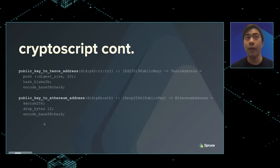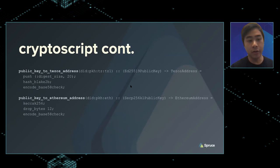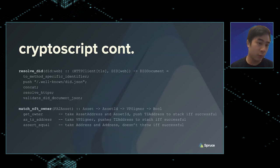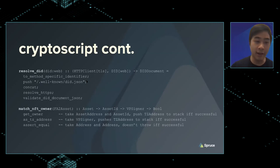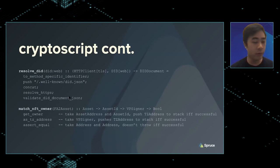You can also talk to the outside world. In decentralized identity, there's the did:web DID method — a form of decentralized identifier resolution where you query a website over TLS — and you can implement that with CryptoScript. If you have HTTP client libraries, you can push the expected path past the method-specific identifier, concatenate the two strings, resolve at HTTPS, and the DID module would provide a validation function to check if the fetched JSON is a valid DID document.